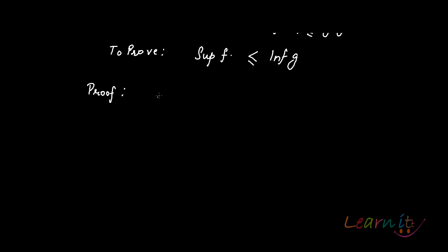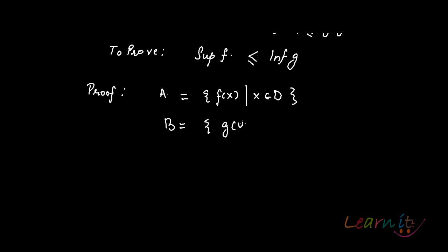So let's take two sets. A is the set of all function values f(x) such that x is in the domain. And B is the set of all function values g(y) such that y is in the domain.